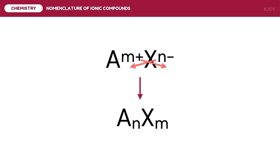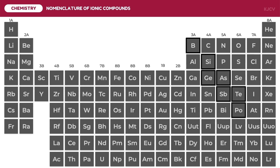In this lesson, we are going to discuss the nomenclature of three types of ionic compounds. We are going to use the periodic table as our guide in writing and naming ionic compounds.